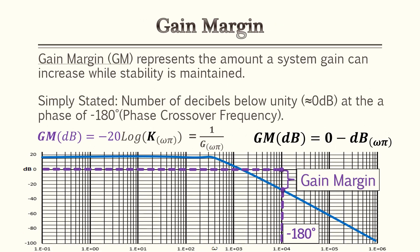Let's go over gain margin. Gain margin represents the amount a system's gain can increase while maintaining stability. Simply stated, if you wanted to calculate this or find it on a Bode plot, it's the number of decibels below zero decibels at the phase of negative 180 degrees. That's also considered your phase crossover frequency.